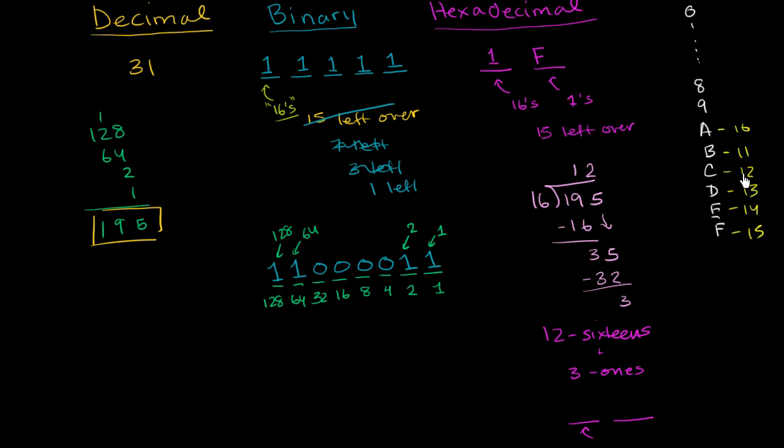So to represent 12 in base 16, you use C. So you have C 16s, and you have 3 1s. So once again, this looks more like a gate at an airport, but this is actually a number in base 16. C3. This is telling you you have 12. This is a symbol for 12 in base 16. You have 12 16s, because this is the 16th place, and you have 3 1s. 12 16s, and if you multiply 12 times 16, you get to 192, you add 3, you get to 195. So hopefully you found that interesting.